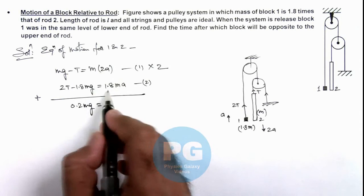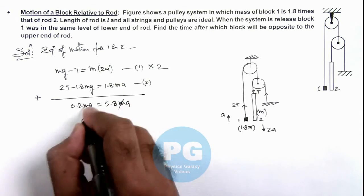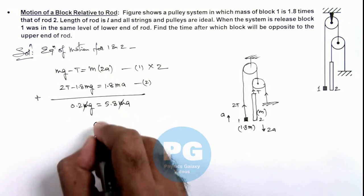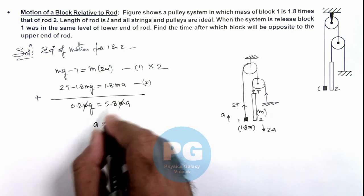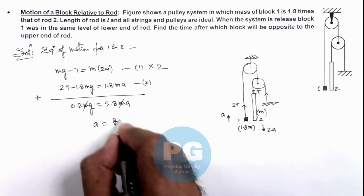This is 4ma + 1.8ma = 5.8ma. So here m gets cancelled out and the value of acceleration we are getting is 0.2/5.8, which is g/29.